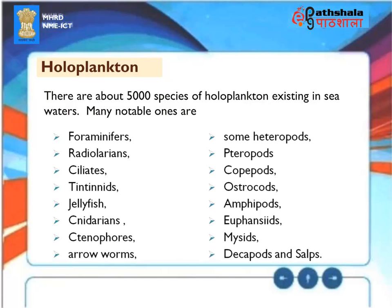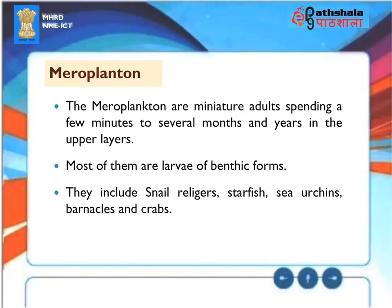Holoplanktons: There are about 5,000 species of holoplanktons existing in seawaters. Many notable ones are Foraminifers, Radiolarians, Ciliates, Tintinids, Jellyfish, Cnidarians, Ctenophores, Arrowworms, some Heteropods, Pteropods, Copepods, Ostracods, Amphipods, Euphausiids, Mysids, Decapods, and Salps. The Meroplanktons are miniature adults spending a few minutes to several months or years in the upper layers — most of them are larvae of benthic forms and include snail veligers, starfish, sea urchins, barnacles and crabs.